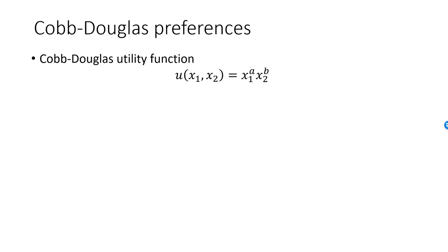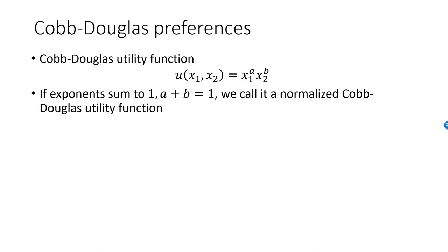We see that the Cobb-Douglas utility function is normalized if the exponents sum to 1, that is, if a plus b is equal to 1. For example, if a is equal to 1 half and b is equal to 1 half, and u is equal to the square root of x1 times x2, then u is a normalized Cobb-Douglas utility function.